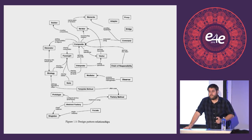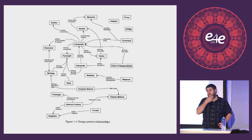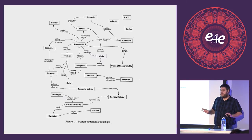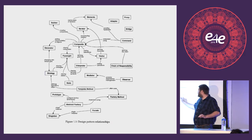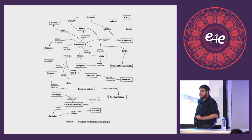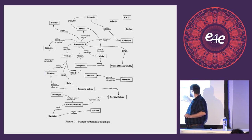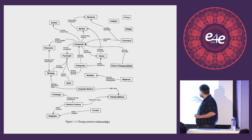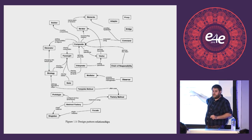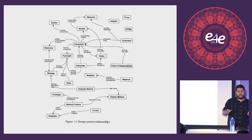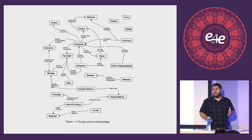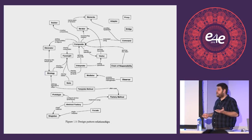So let's look back at our dependency graph. Now that we understand how the observer works, we can look at things related to the observer and have better context for understanding them. Now that I understand how the observer works, I can look at the mediator pattern and understand it more easily than I would have before studying the observer pattern.